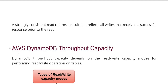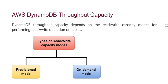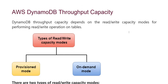Ab discuss karte hain Amazon DynamoDB throughput capacity. DynamoDB throughput capacity depends kari hain read and write capacity modes for performing read and write operations on tables ke liye. Yahan pe types hain read and write capacity modes: first aati hai Provisioned mode aur second aati hai On-Demand mode.